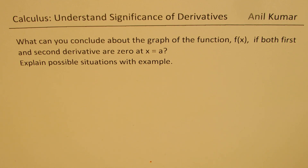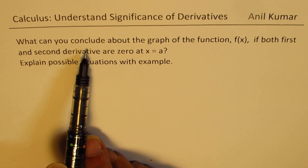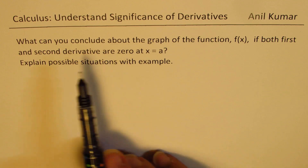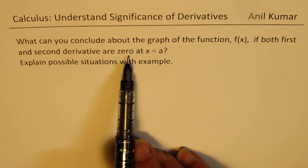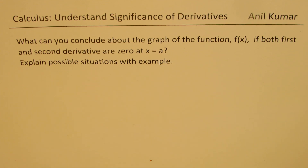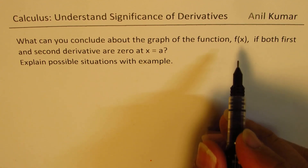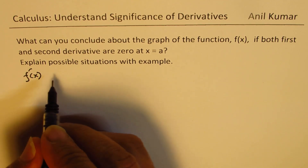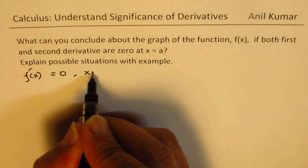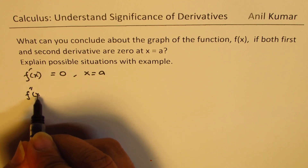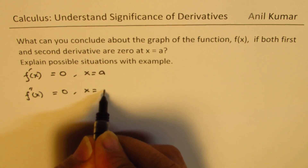We have a very special case to discuss. The question is: what can you conclude about the graph of a function f(x) if both the first and second derivative are 0 at x equals a? We are saying that the first derivative equals 0 at x equals a, and the second derivative also equals 0 at x equals a.